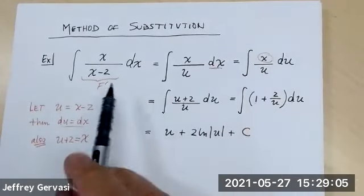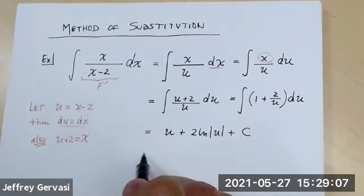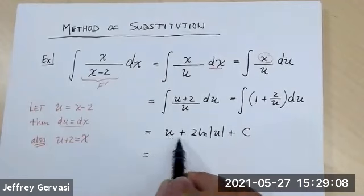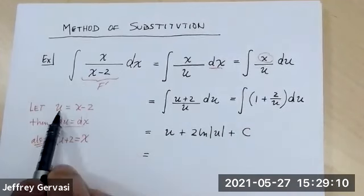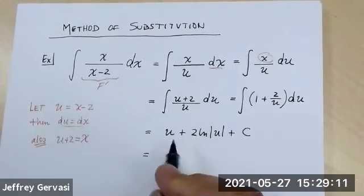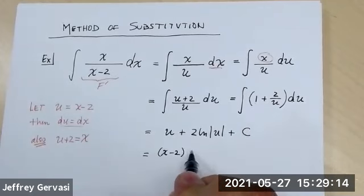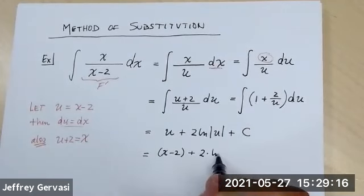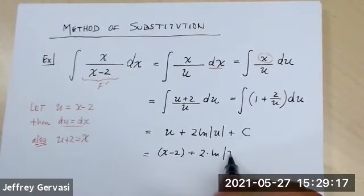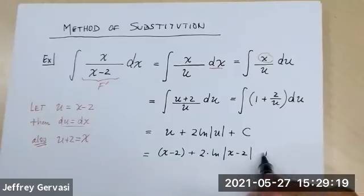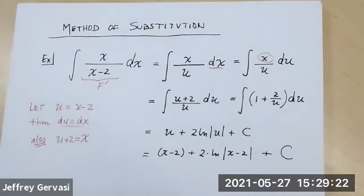We took something we couldn't evaluate and transformed it into something routine. Of course, we started the problem in X's, so we have to go back and replace the letter U with the function it represents. Remember, U is equal to X minus two, so substitute that back. That's the method of substitution.